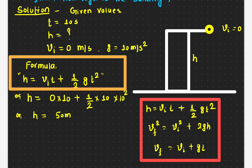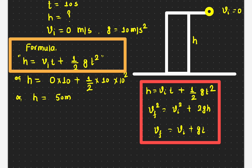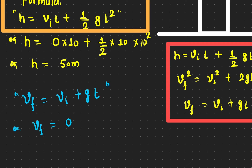Now let's find out what is the speed of the ball when it hits the floor. We use the equation: final velocity equals initial velocity plus g times t. The final velocity we need to find, the initial velocity is 0, the g value is 10, and the time is also 10. So the final speed is 100 meters per second — that's the speed at which the ball hits the floor.